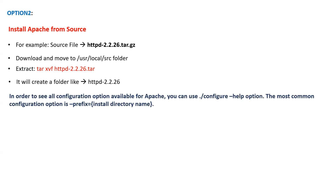Once it is done, you have to compile the source for your operating system. To see all the configuration options available for Apache, you can run the command './configure --help'. This will show you all the options available with the Apache configure command.